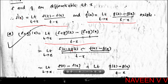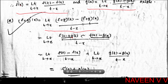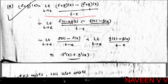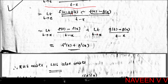So the limit becomes: limit t→x of [f(t) + g(t) - f(x) - g(x)] / (t - x), which equals limit t→x of [f(t) - f(x)] / (t - x) + [g(t) - g(x)] / (t - x). Applying the limit sum rule, limit of [f(t) - f(x)] / (t - x) = f'(x), and limit of [g(t) - g(x)] / (t - x) = g'(x).